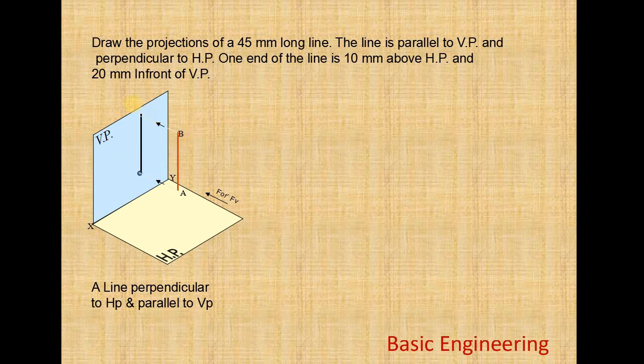We get the symbols A' and B'. This is the front view of line AB, denoted as A'B'. Now we have to draw the top view.